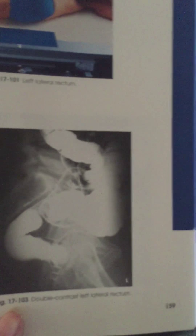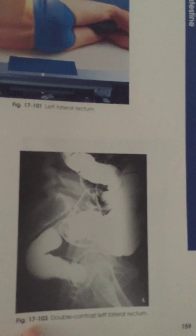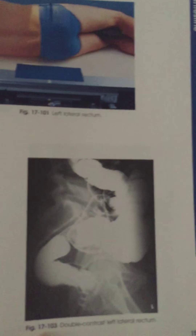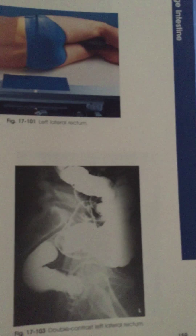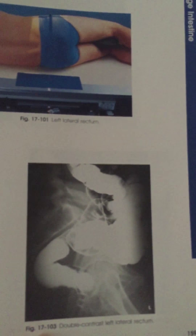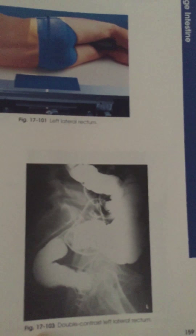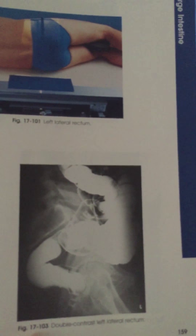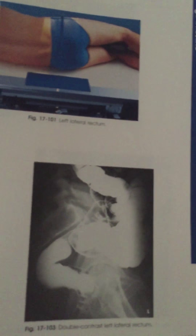After the PA axial I did a left lateral. You want evidence of proper collimation, the recto-sigmoid area centered at the center of the image, and no rotation of the patient — confirmed by making sure the hips and femora are superimposed. The superior portion of the colon should not be included when the recto-sigmoid region is the area of interest, plus an exposure technique that shows all of the anatomy.